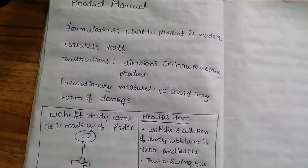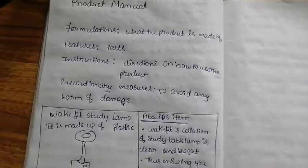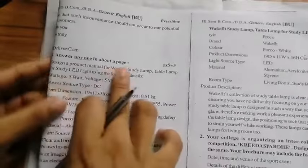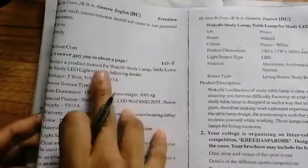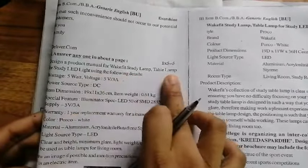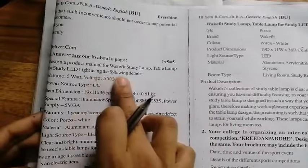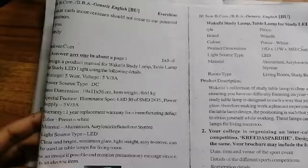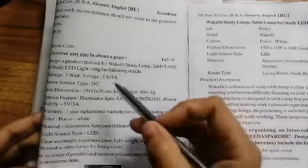Let us see how to write a product manual. This question asks: design a product manual of a study lamp, a table lamp for LED light using the following details.